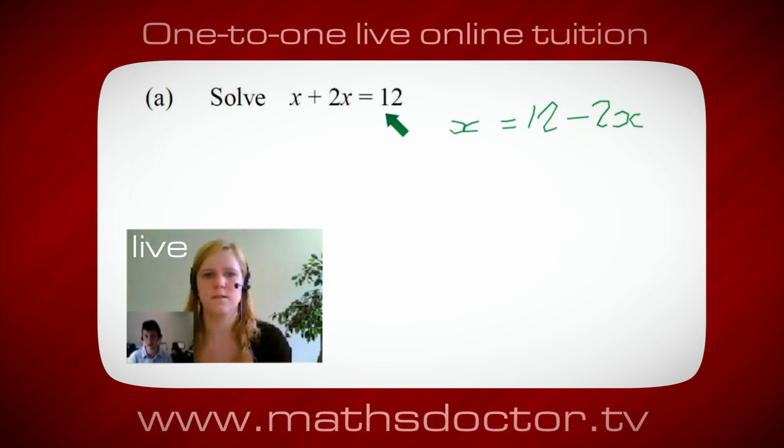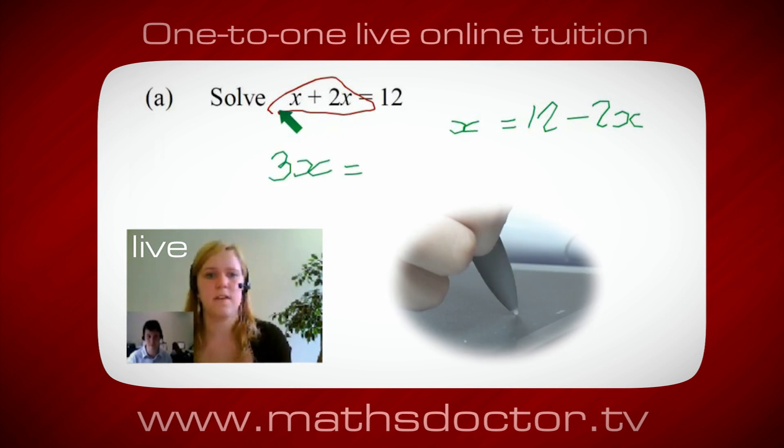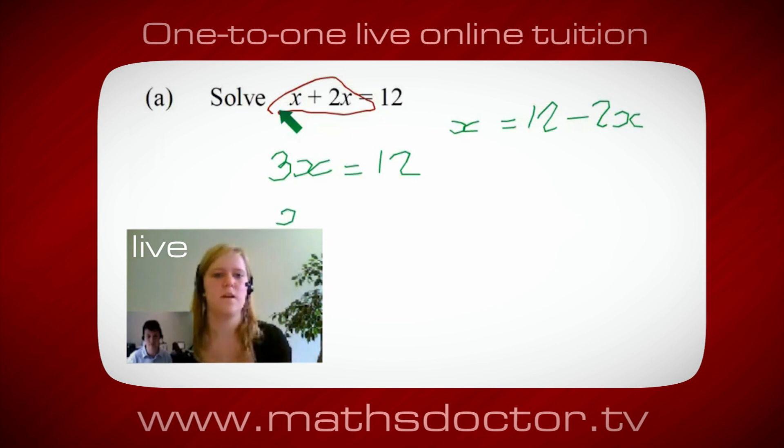Okay, so a lot of the time we want to get x by itself, but what we want to do first is get all of these x's together. So can you see anything we can do with this? Get all these together in one place. Oh, okay, it's 3x isn't it? Yeah, absolutely. So 3x equals 12. Oh, and so x equals 4. Brilliant, spot on, well done.